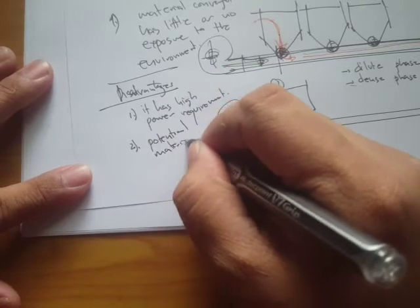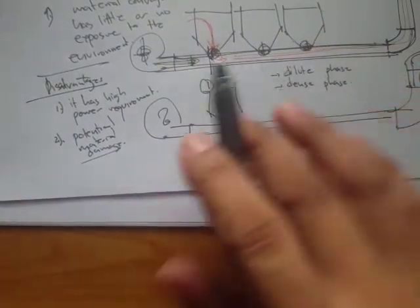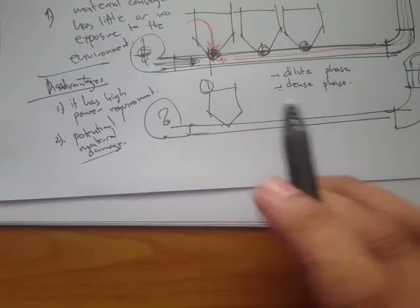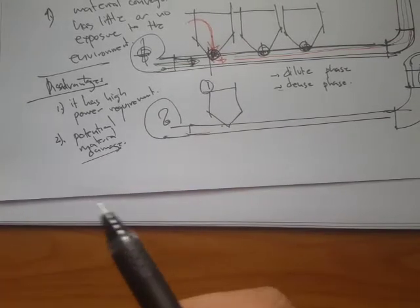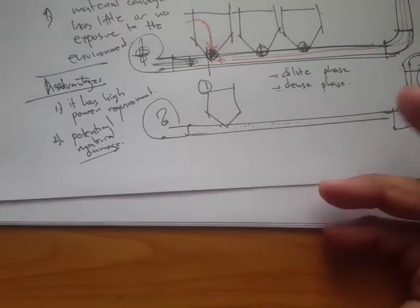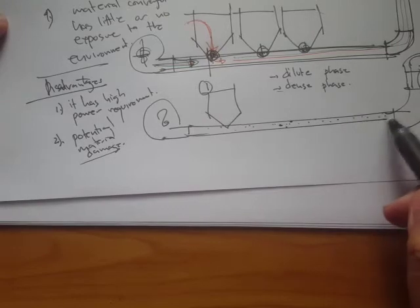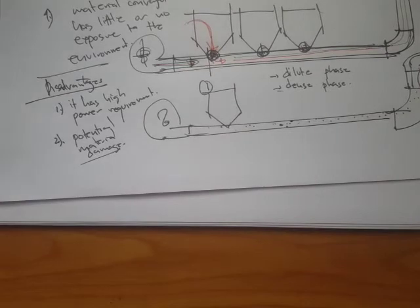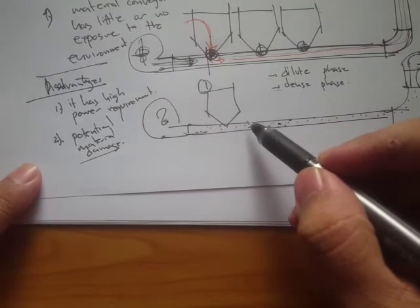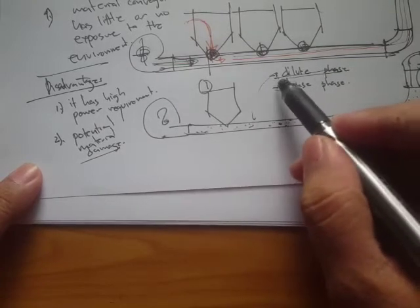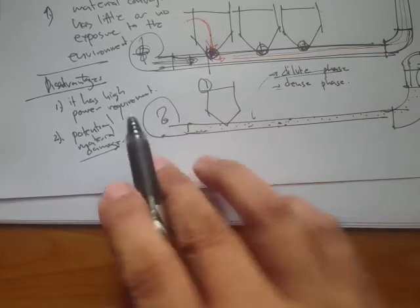Another disadvantage is potential material damage. Friable materials — those that can break down easily due to impacts or mechanical forces — are at risk because materials transported in the air experience collisions and attrition between solids and between solids and the pipe walls, which can damage the product. Again, this mainly applies to dilute phase, while dense phase can reduce material damage due to attrition forces.